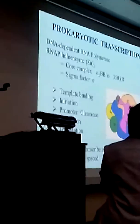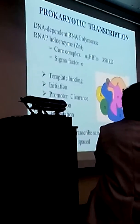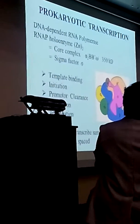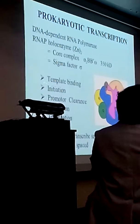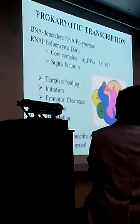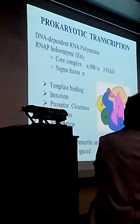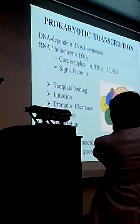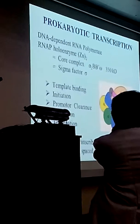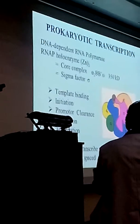So it is made up of four complexes, that is the core, and then you have the sigma factor. So first is template binding, then initiation, then promoter clearance, then elongation, then termination. One RNA polymerase may transcribe the same template, and they are spaced. So there is enough room for that to happen.